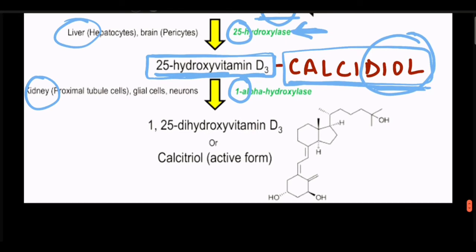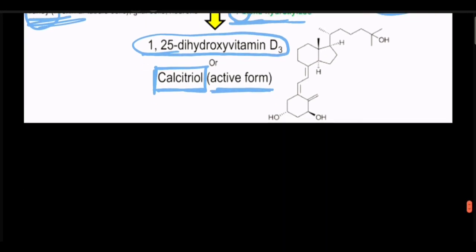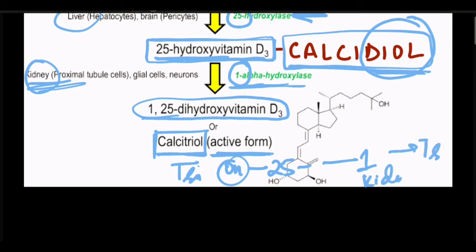Calcidiol then undergoes 1-alpha hydroxylation at the kidney, leading to the formation of 1,25-dihydroxy Vitamin D3, or calcitriol, which is the active form of Vitamin D. Remember 'triol' because it already had one hydroxyl group, then got 25-hydroxylation at the liver, and then 1-alpha hydroxylation at the kidney — making it a triol.